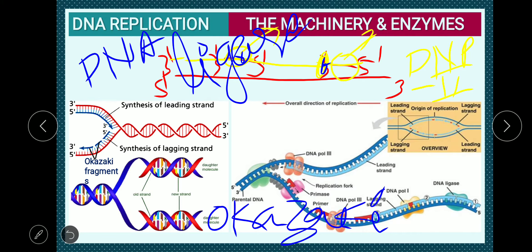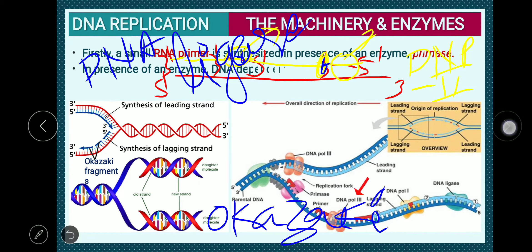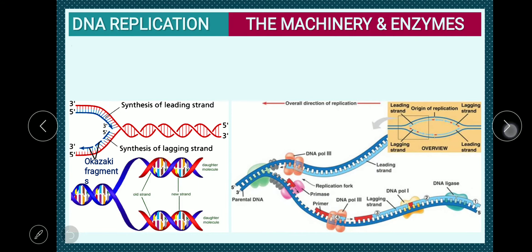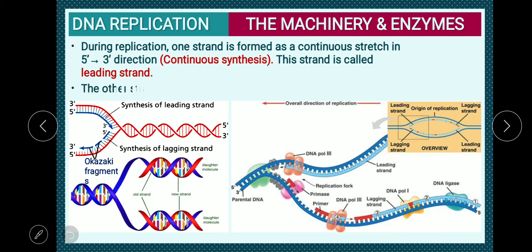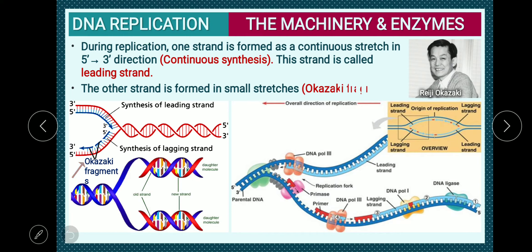This is what DNA replication involves. During replication, one strand is formed as a continuous stretch in the 5' to 3' direction — this is called the leading strand. The other strand is formed in small stretches called Okazaki fragments, in a fragmented 5' to 3' direction — this is called discontinuous synthesis, and the strand is the lagging strand.